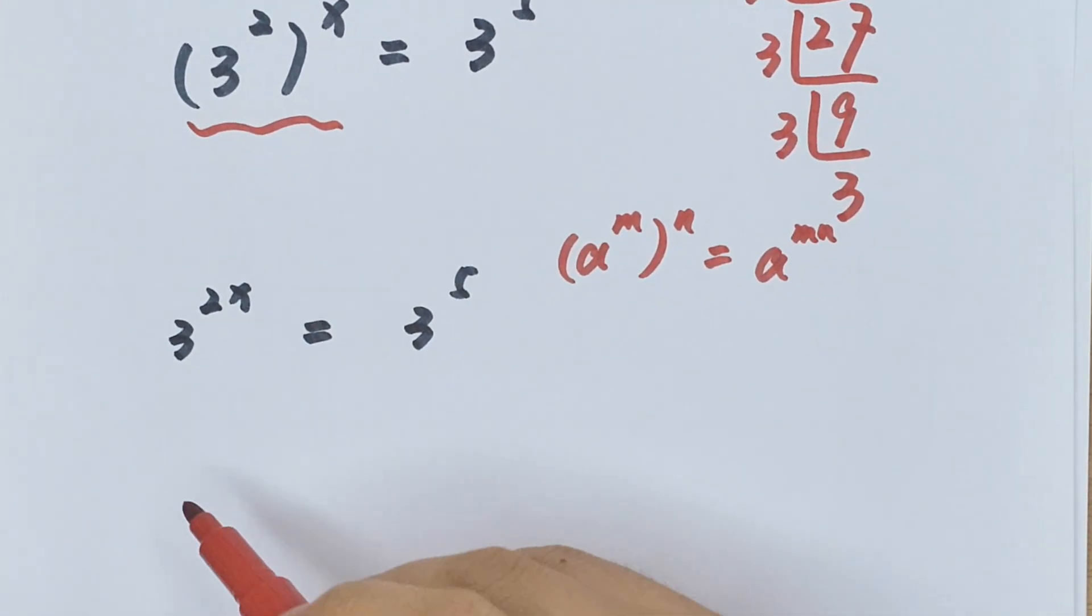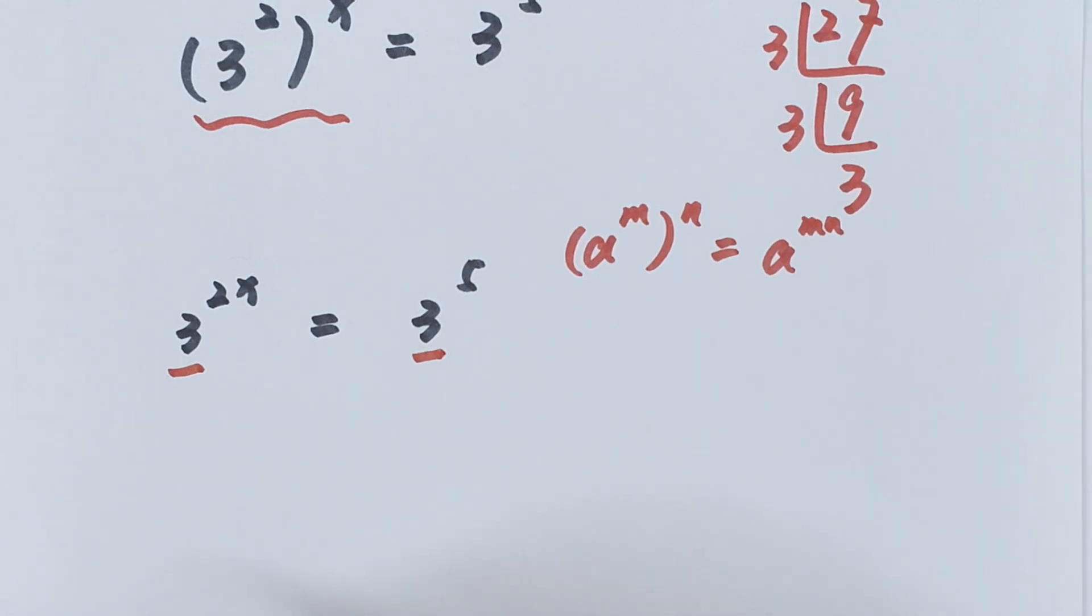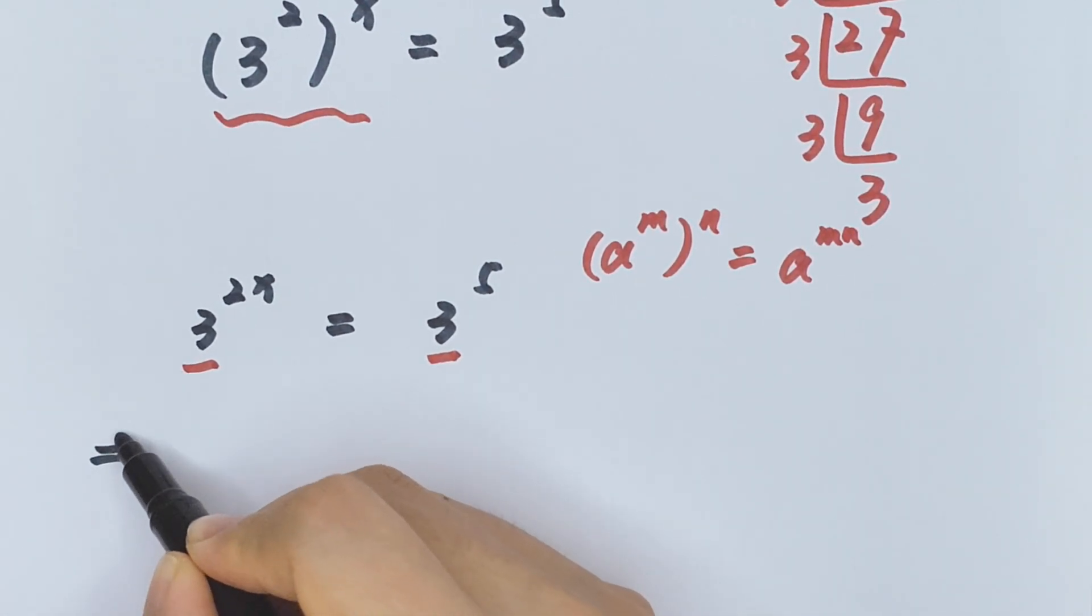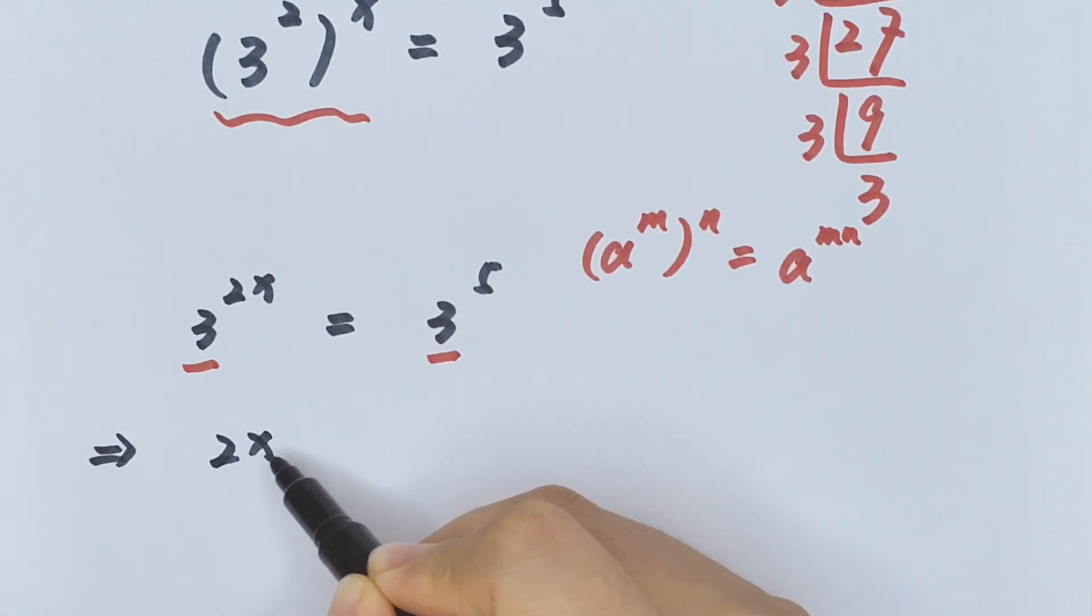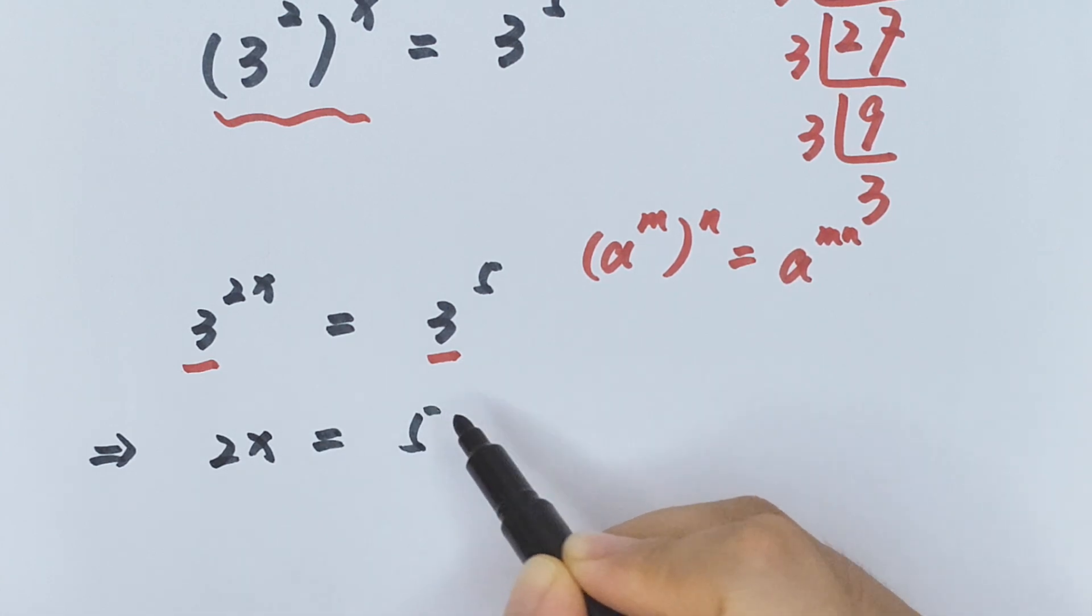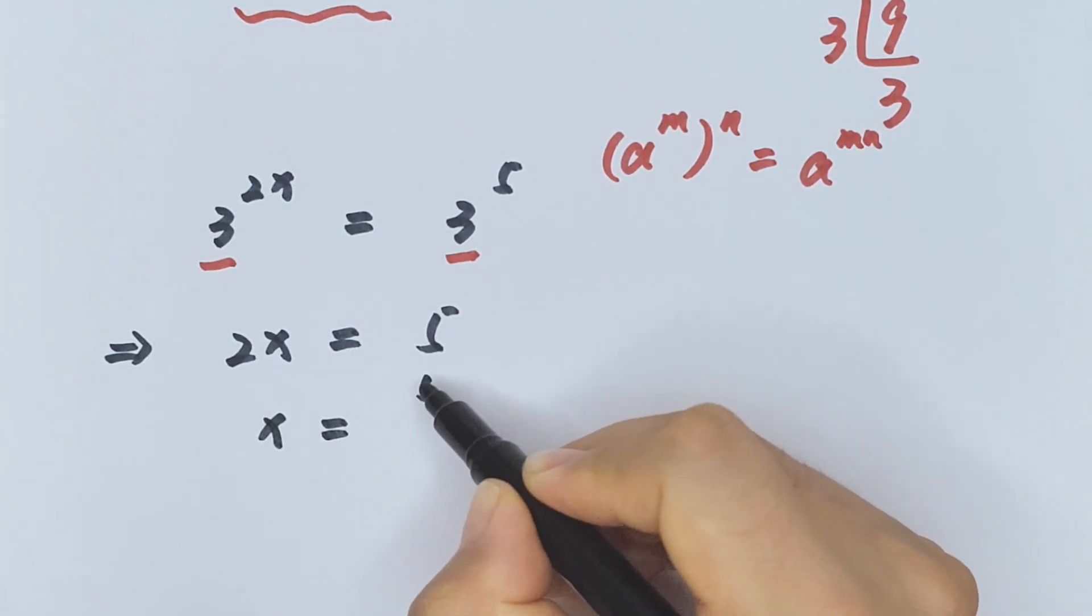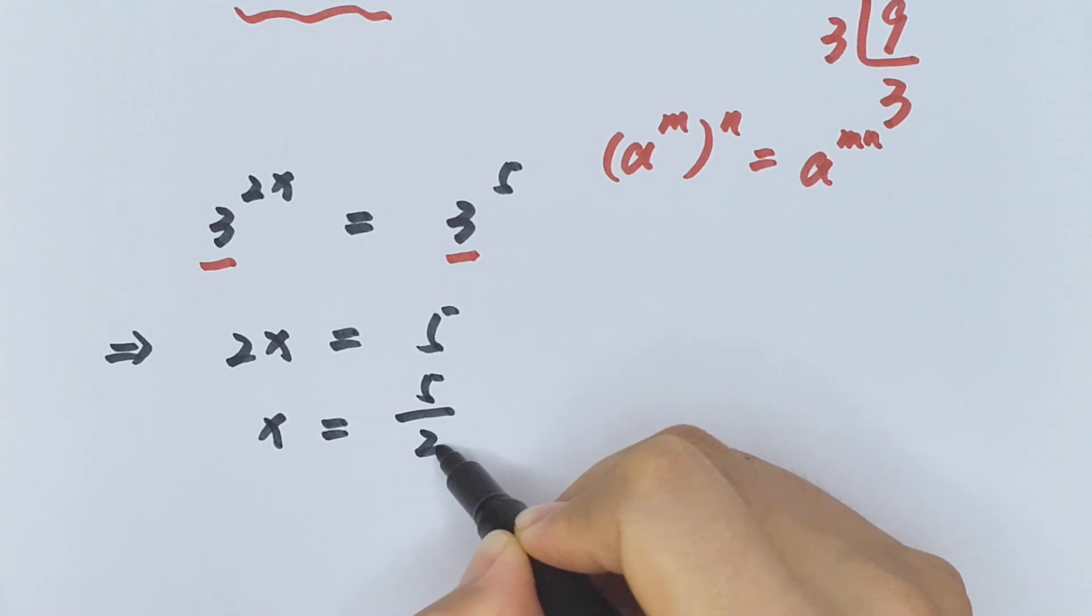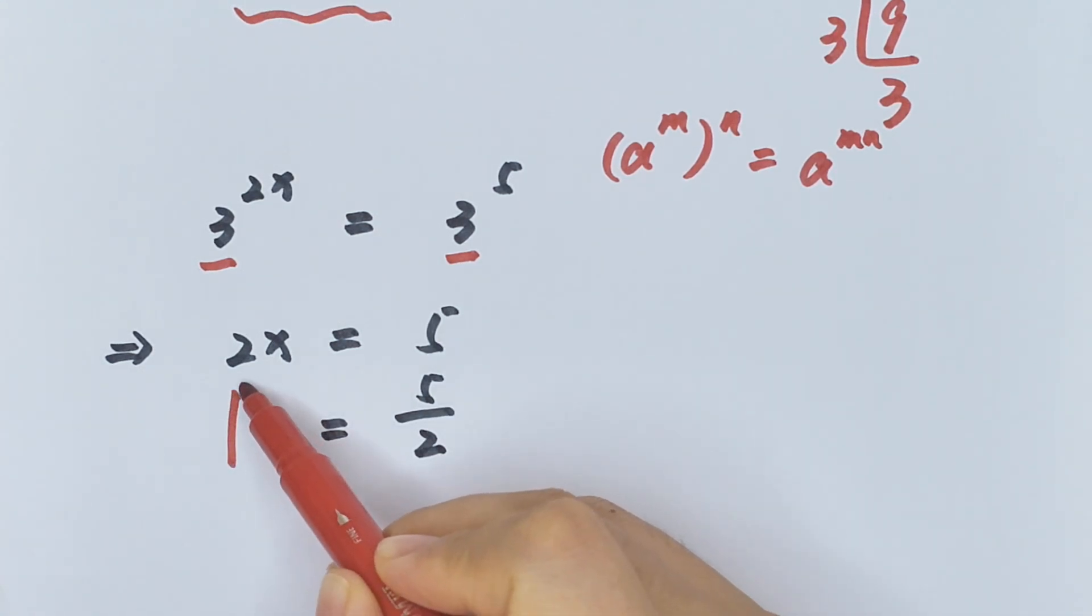Now we have the same base, so it means 2x equals 5, so x equals 5 over 2. This is the final answer.